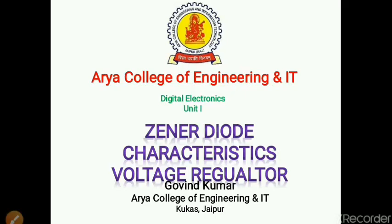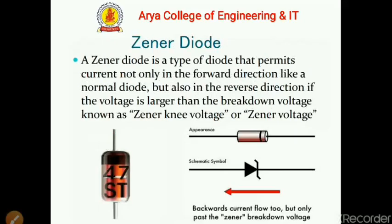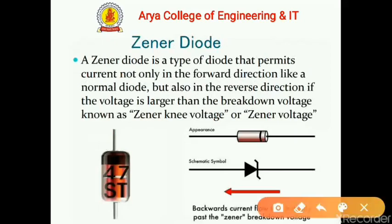Starting with the history of Zener diode: Clarence Melvin Zener was the American physicist who first described the property concerning the breakdown of electric insulators. These findings were later exploited by Bell Labs in the development of the Zener diode, which was duly named after him.